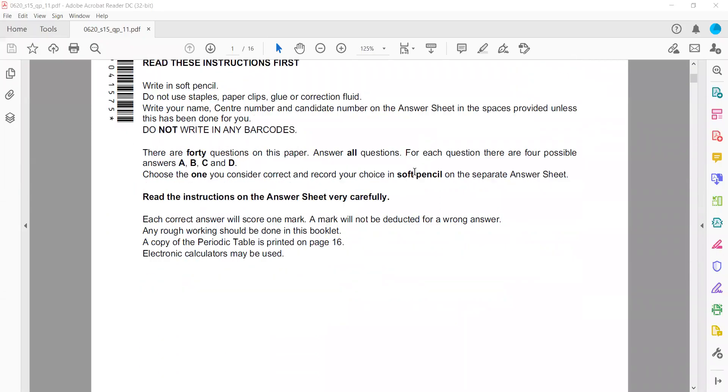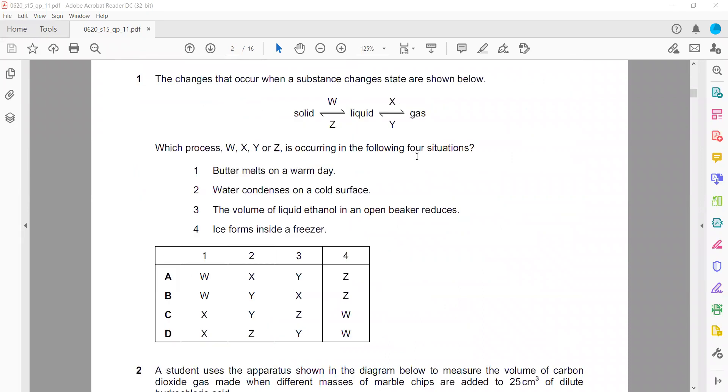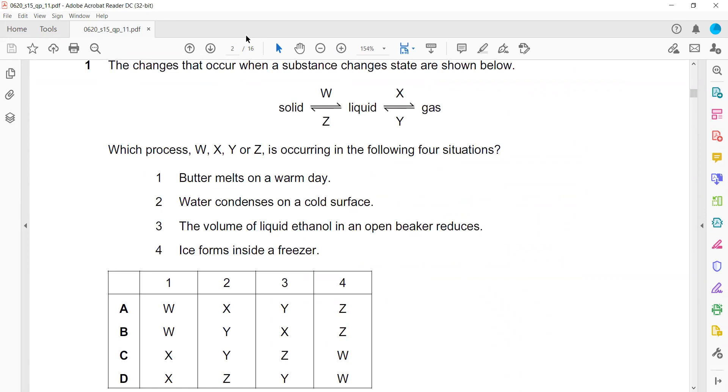This is paper one, multiple choice question from May June 2015. The changes that occur when a substance changes state are shown. You have to identify which processes W, X, Y, or Z is occurring. For butter melting, the solid is turning into liquid. A solid turning into a liquid is shown by W.